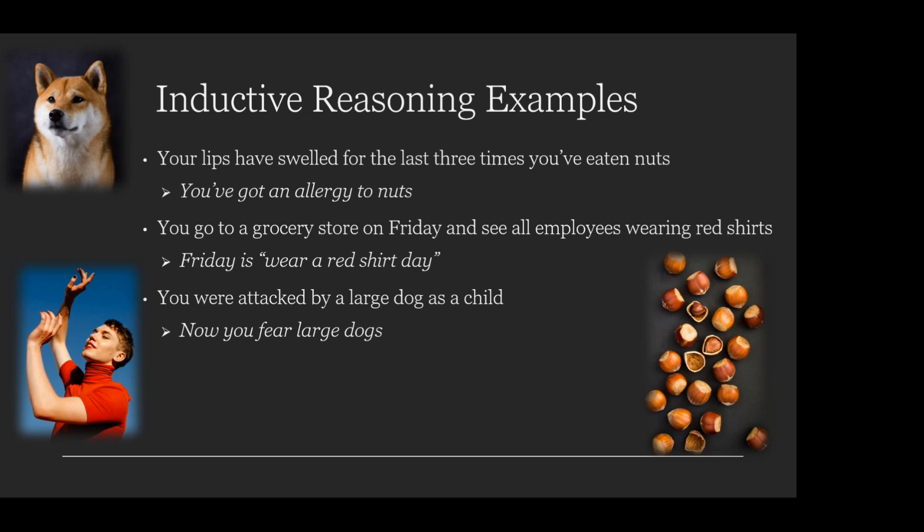What all of these examples have in common is you take a specific incident or several incidents of a specific occurrence, and from there you make a general rule that you think applies. For example, regarding eating nuts — you don't know for certain that you have an allergy to nuts, but from your experience and the things that you've seen, you can determine that as a general rule for yourself. Now let me go into talking about deductive reasoning, because talking about the two together can help further clarify the distinction.